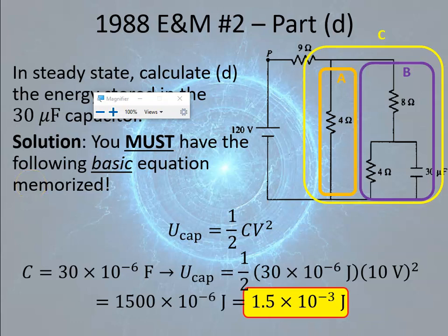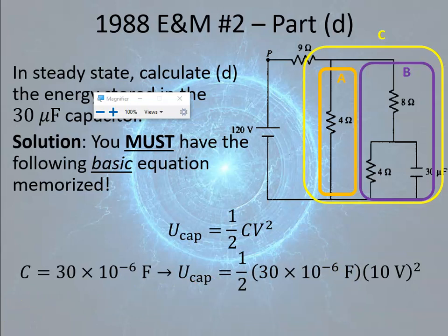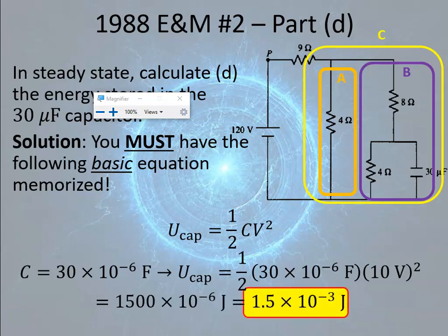They gave two points for this problem: one point for listing the equation U equals 1/2 CV squared, and one point for the final answer — they wrote it as 1500 microjoules. Plugging in the numbers correctly with 30 times 10 to the minus 6 farads, you get 1.5 times 10 to the minus 3 joules.